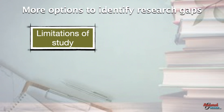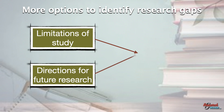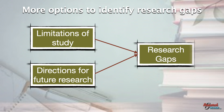Apart from a researcher identifying research gaps in another researcher's study to use in his own research, he should also share the limitations of his study and provide directions for future research in his current work. Every research faces some limitations, best known by the researcher himself. Such limitations can be communicated as implications for future research, thereby allowing the development of relevant future knowledge or theories.